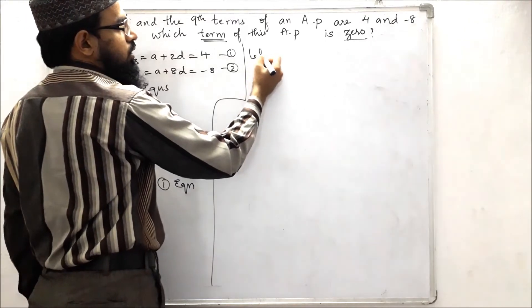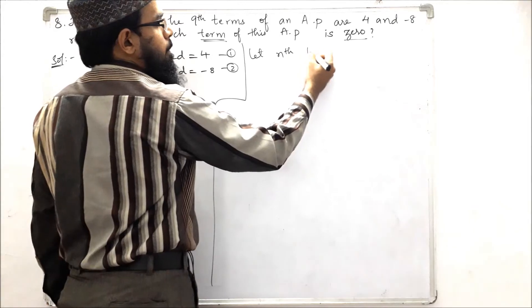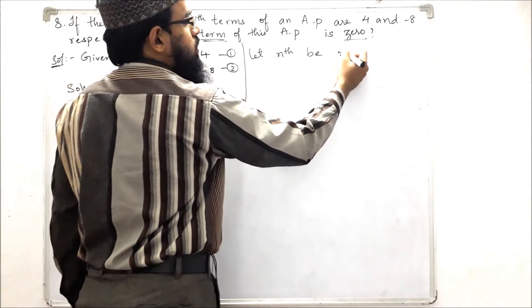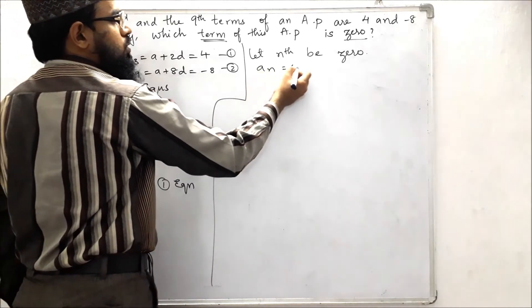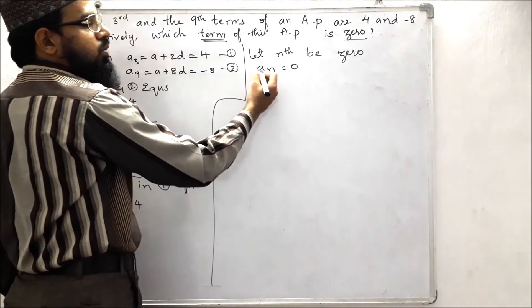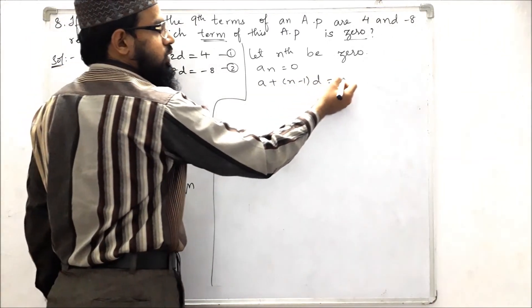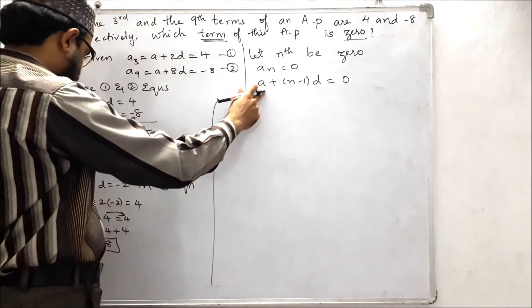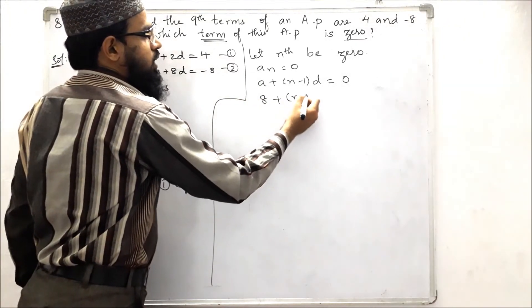Let the nth term be 0. So a_n is equals to 0. What is the formula of nth term? That is a plus n minus 1 into d is equals to 0. We know the value of a, that is 8 plus n minus 1 times d.